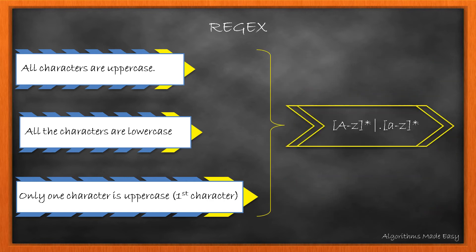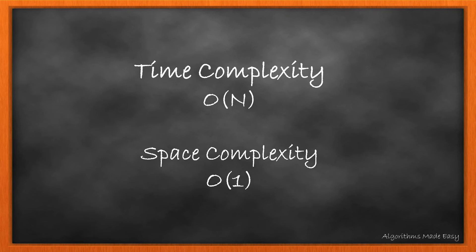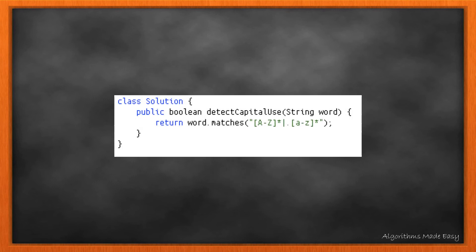Now that we know the regex, we just need to return if the word matches the regex. The time complexity for both approaches is O(n) while the space complexity is O(1). Here is the actual code snippet for this method.